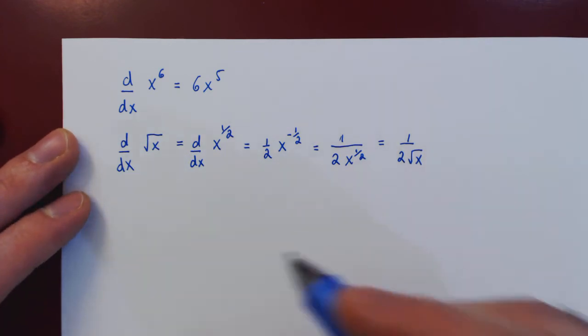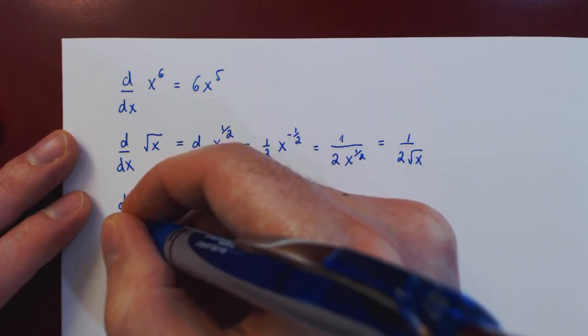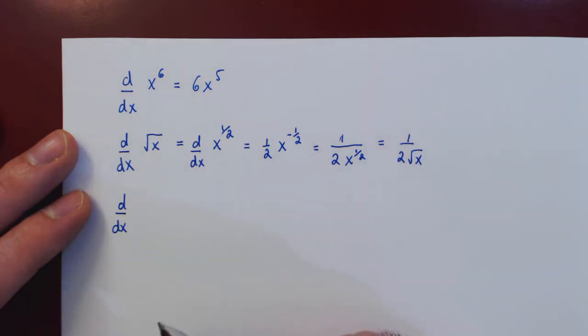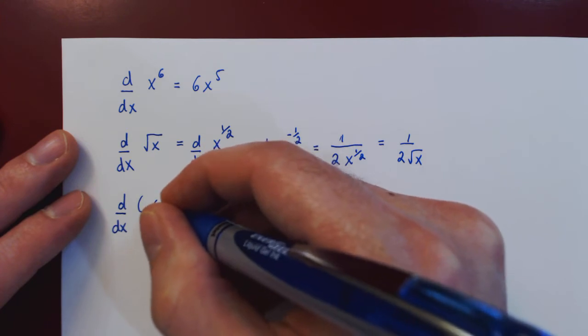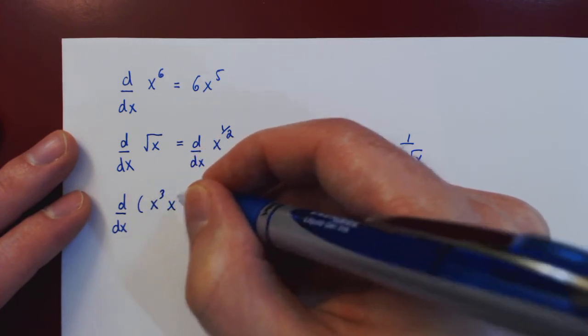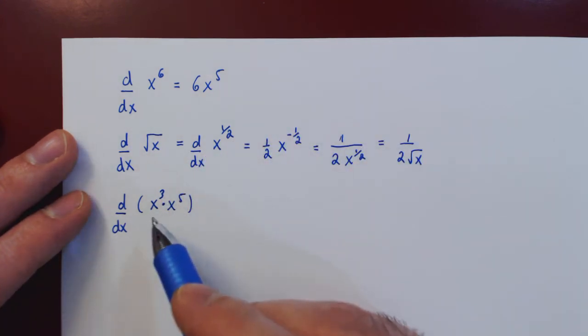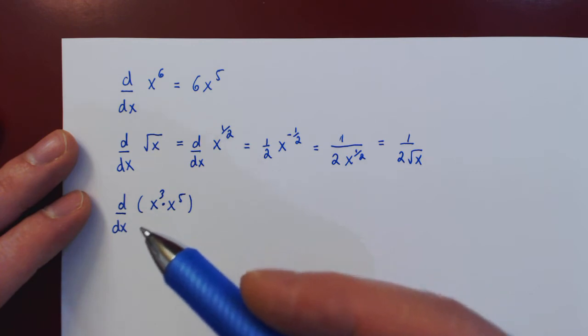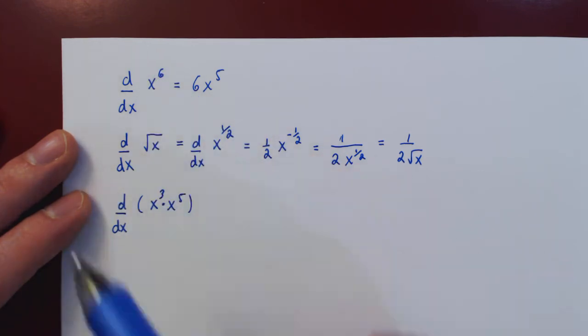Let's do two more examples to again show that sometimes before we can apply the power rule, we have to first simplify. So what if we ask for the derivative of x cubed times x to the 5? Well, in this form, we cannot yet differentiate with the power rule, as the power rule only applies directly for a single power of x.